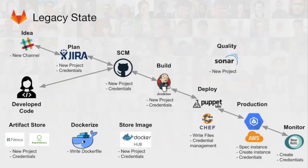They'll create a new project or folder in Jenkins, making sure it has the right credentials to connect back to source control. Then on the DevOps side, we might write files for Puppet and Chef to stand up environments for this project.